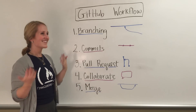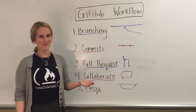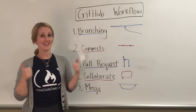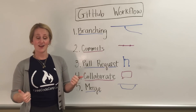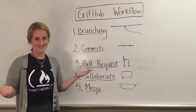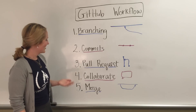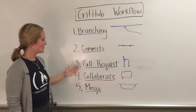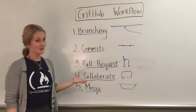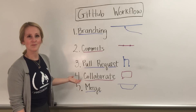Once you do that and they see the changes, you can collaborate on them. They might give you a thumbs up and say it looks great, or they might have some critiques and suggestions — and that's good, that's the point. So you've opened the pull request, you've gotten some feedback, maybe even made some more changes and commits on that branch.